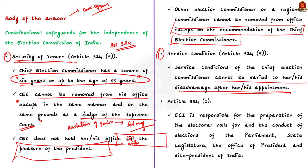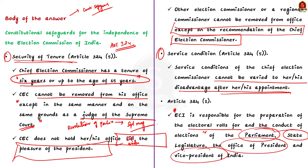Lastly, you can also mention Article 324, Clause 1 in this context. It specifically states that the Election Commission is responsible for the superintendence, direction and control of the preparation of electoral rolls for and the conduct of elections — for elections of Parliament, state legislature, and the offices of President and Vice President. This ensures the independence of ECI as no other body can interfere in its functioning. These are the constitutional safeguards that ensure the independence of ECI.